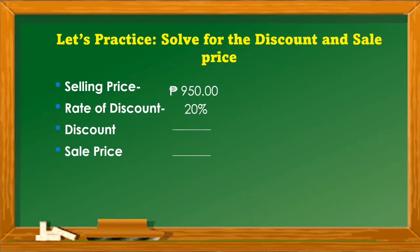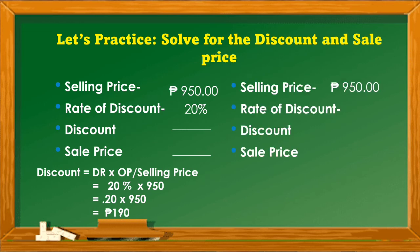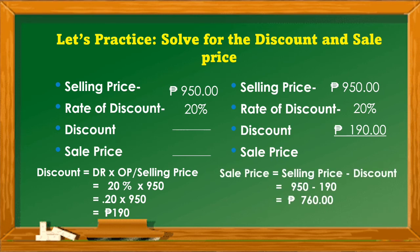Let's practice: solve for the discount and sale price. We have a selling price of 950 pesos and a rate of discount of 20%. Discount equals discount rate times original price: 20% × 950 = 0.20 × 950 = 190 pesos. For the sale price: selling price minus discount — 950 minus 190 equals 760 pesos. The sale price is 760 pesos.